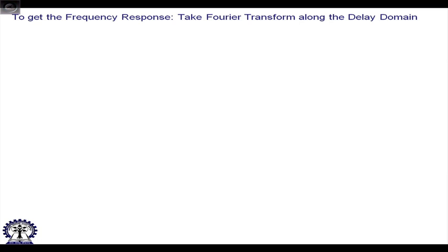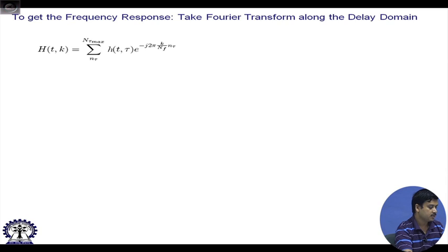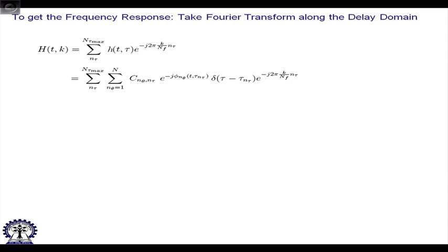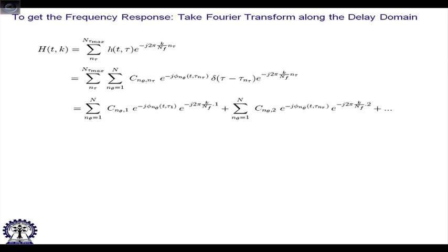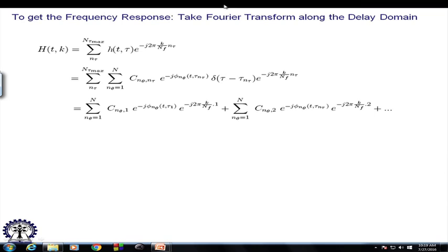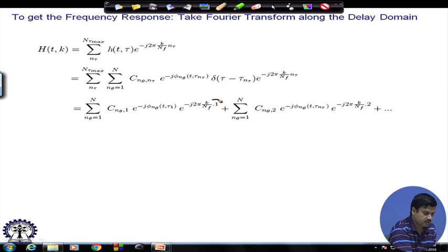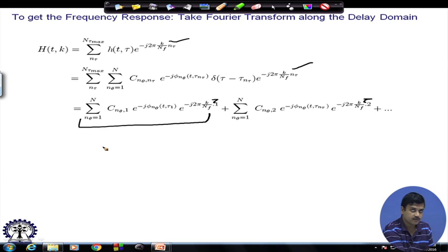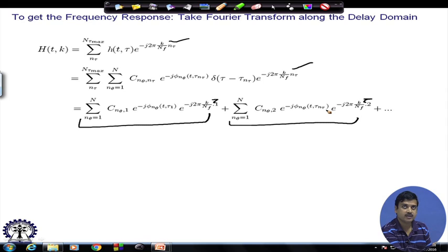We want to see the frequency domain representations, that is, we want to take the Fourier transform in the delay domain. We are taking the discrete Fourier transform in this case. We could also take the continuous Fourier transform, and this is how it would look. The expression for the Fourier transform is given here. What we have is basically the Fourier transform of the echoes coming at the first delay plus the Fourier transform of the second delay.